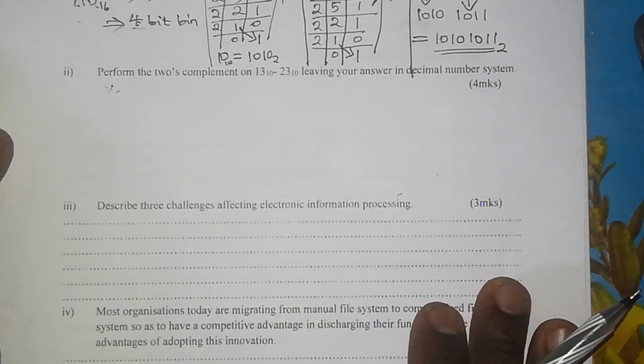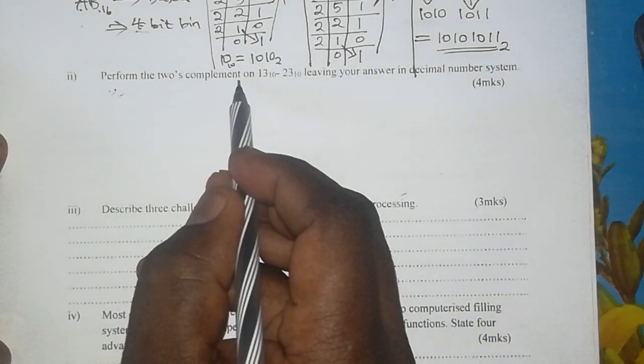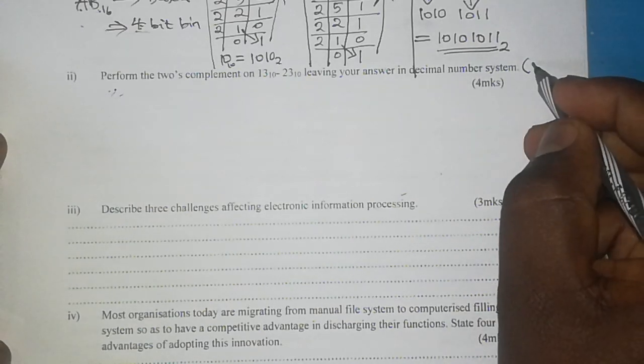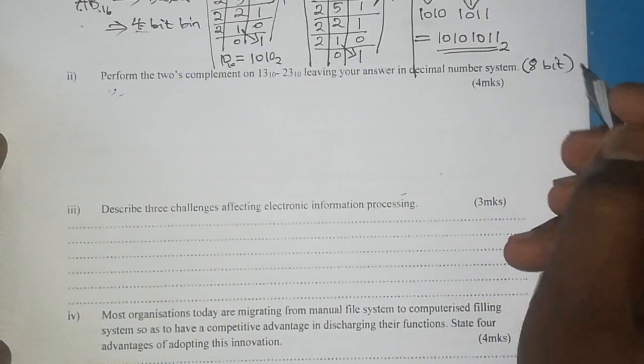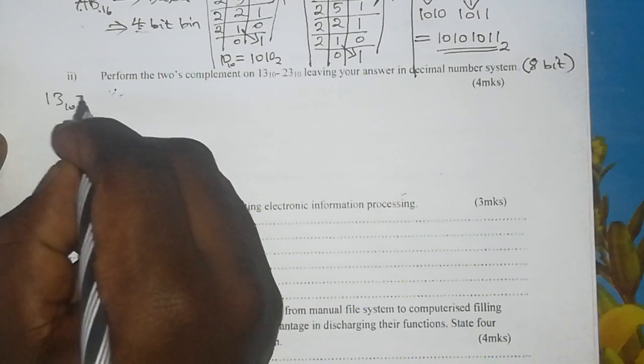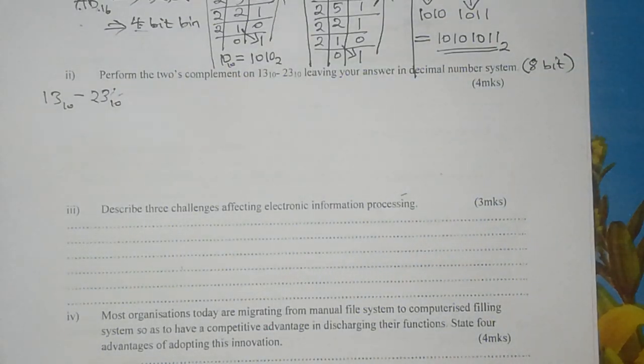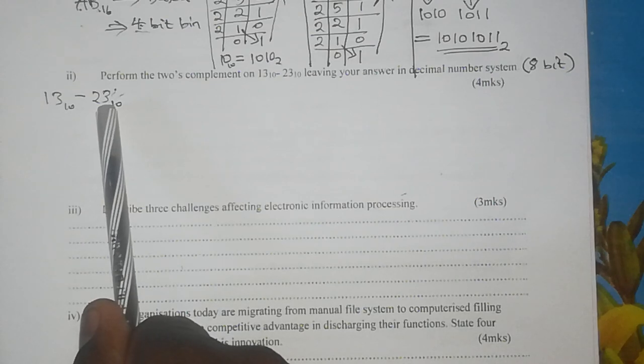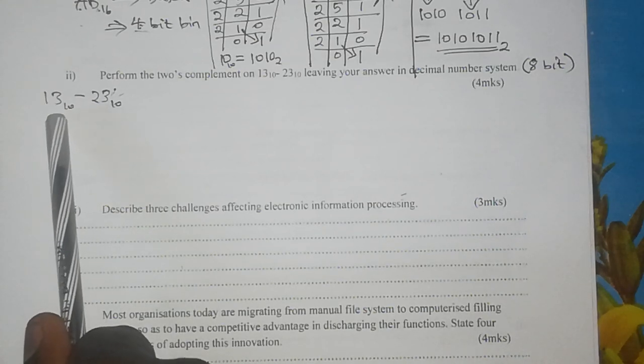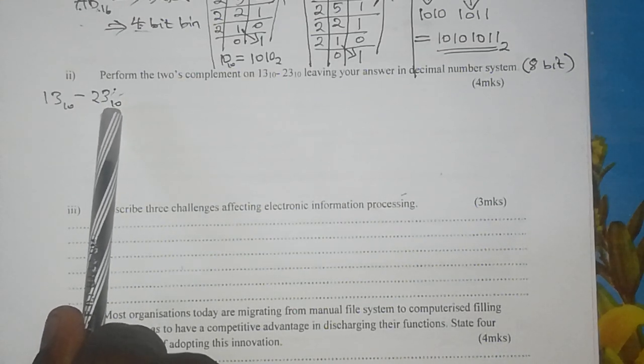So let's see how we can tackle such a question. First of all, we need to understand the 2's complement system of working, and I advise candidates to always work out such a question in the 8-bit system. Our sum is 13×10 minus 23×10. Right away you notice that we are having a larger number being subtracted from a smaller number. We expect to get a negative result. 13 minus 23 we expect to get negative 10.